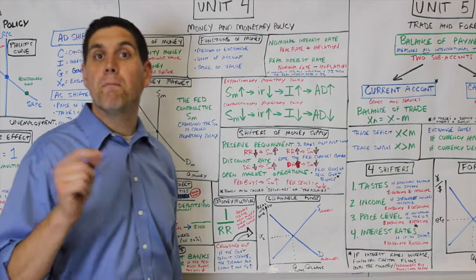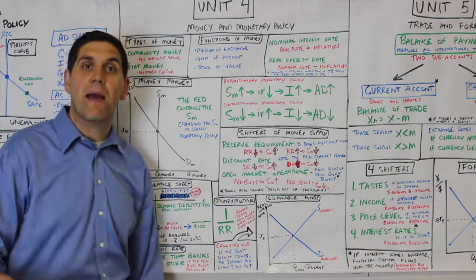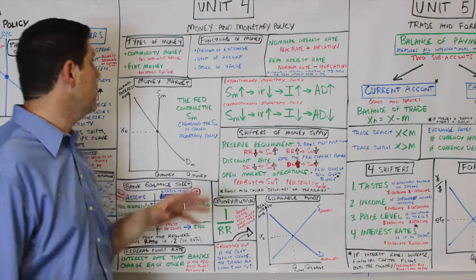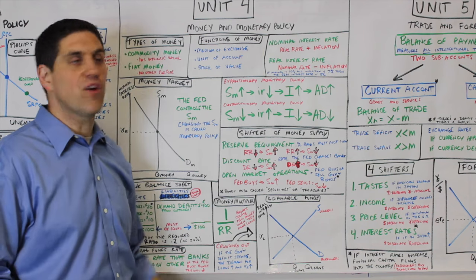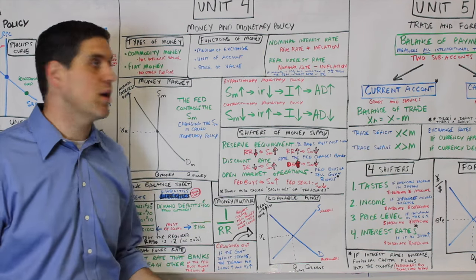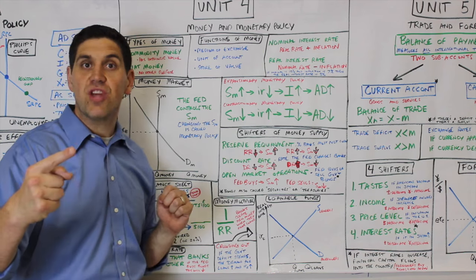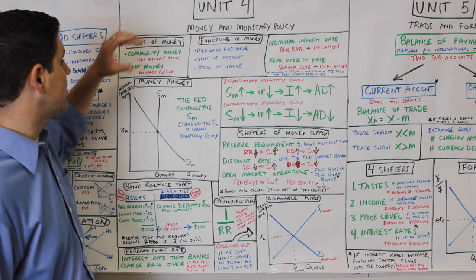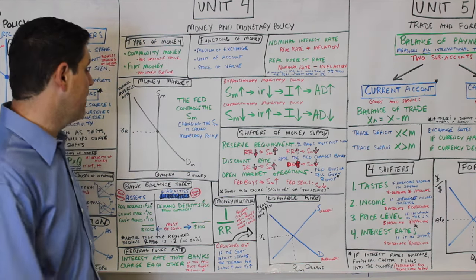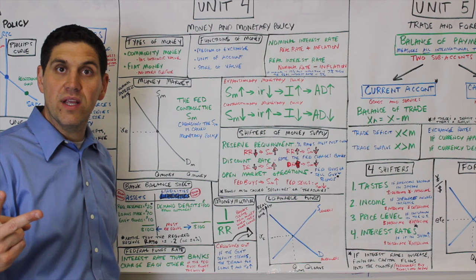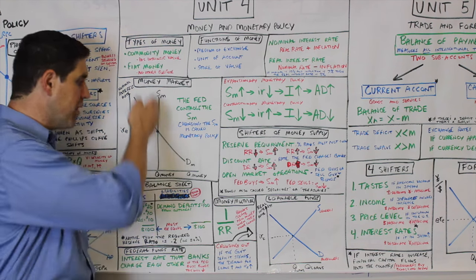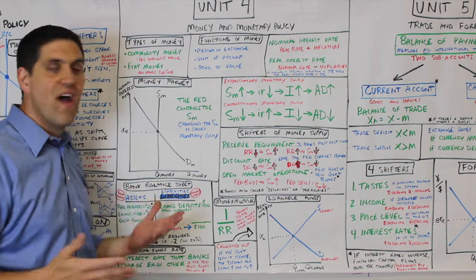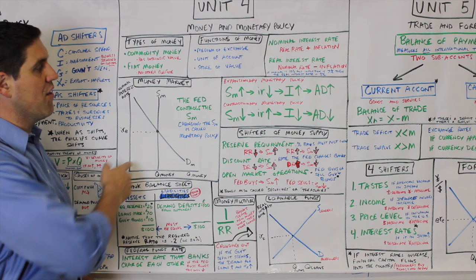In Unit 4, we're going to talk about money and banking. The first concept is the different types of money. There's fiat money that has no other purpose — it has no intrinsic value. And there's commodity money like gold or silver where we can do something else with it. The functions of money are three things: it's a medium of exchange, a unit of account, and a store of value. Then there's the concept of the money supply and demand — called the money market graph. The demand for money happens for two reasons: asset demand and transaction demand. And the supply of money is set by the central bank — the Fed in the United States.